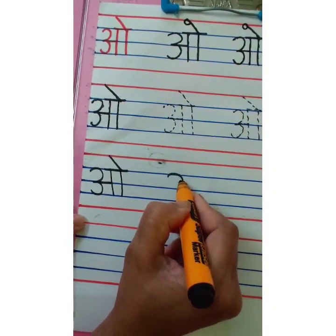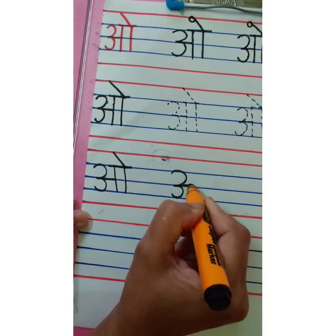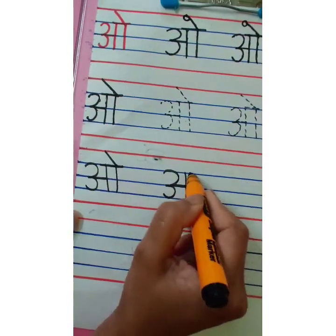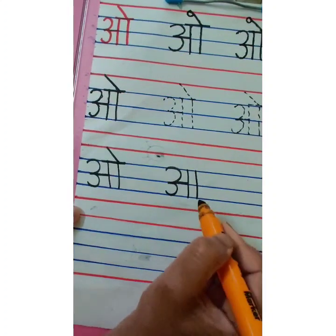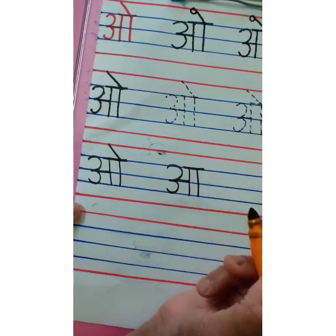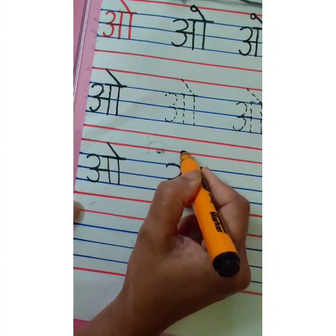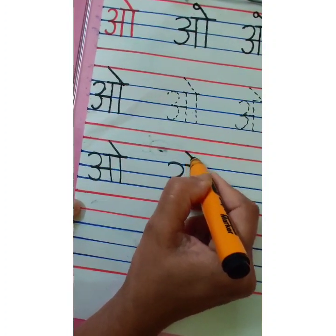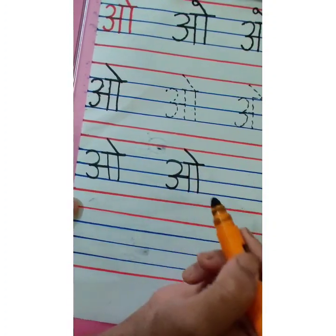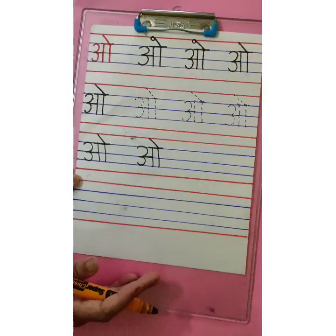One more time. Write number 3. Sleeping line. Standing line. Standing line. This is A. One more standing line. This is A. Then overhead sleeping line. And then matra on top, on the second standing line. This is O. This way you are going to complete your page.